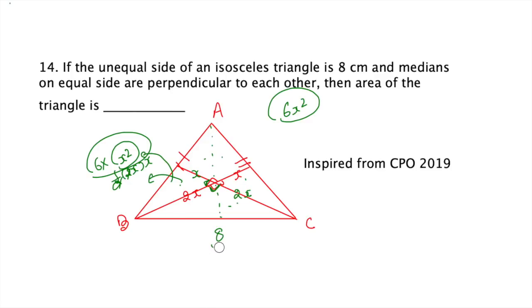By the Pythagoras theorem in triangle BGC, we can say 2x² plus 2x²—perpendicular squared and the other perpendicular squared—that is twice 2x², is nothing but 8². This is 4x² equals 8², so x² is nothing but 8.